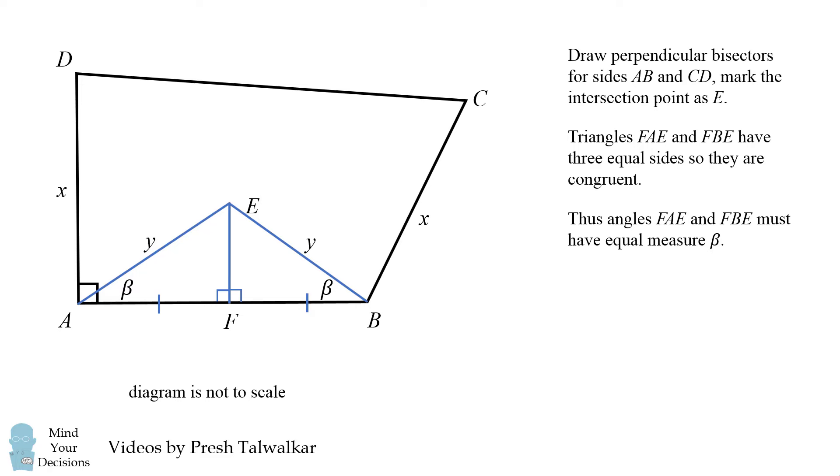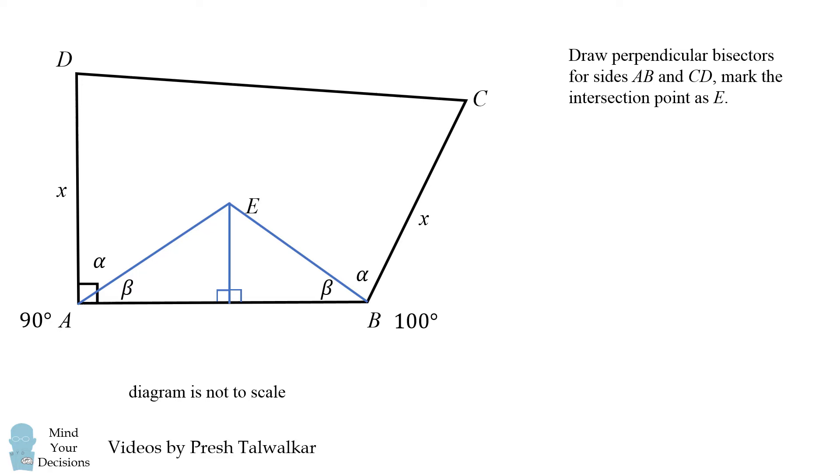Now let's go back to our bigger diagram and the angles for A and B. By the given information, angle BAD is equal to 90 degrees and angle ABC is equal to 100 degrees. But we've just demonstrated that angle BAD is equal to alpha plus beta which equals 90 degrees and angle ABC is equal to alpha plus beta which equals 100 degrees.